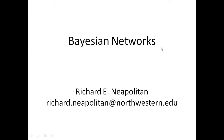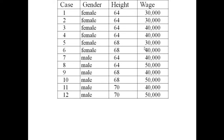They are somewhat the standard architecture for handling uncertainty in artificial intelligence and informatics. Recall this example we had before of these data, and we said that perhaps these data could be considered indicative of some population at large. And we noted that wage and height are not independent.